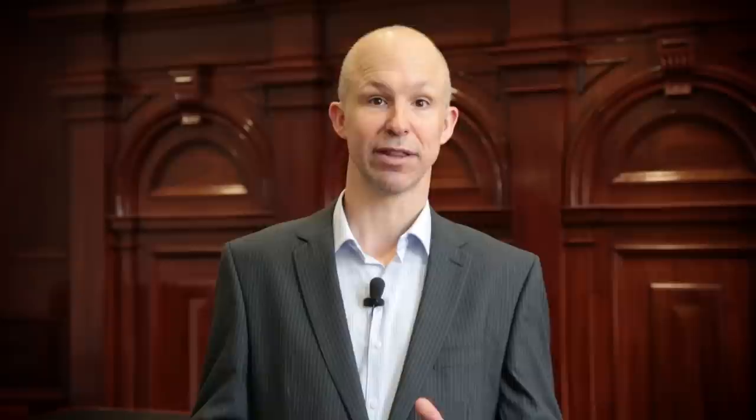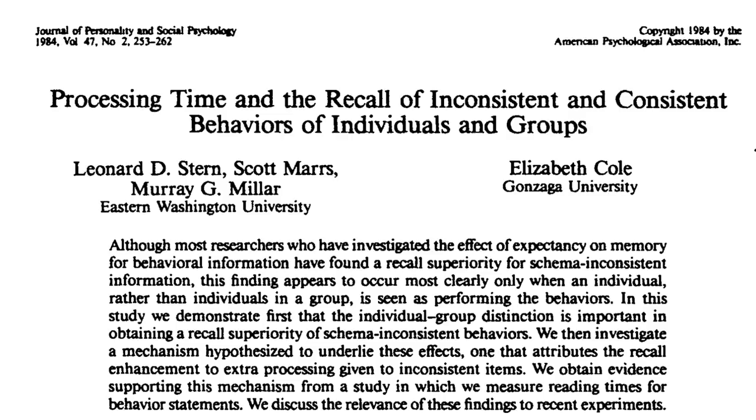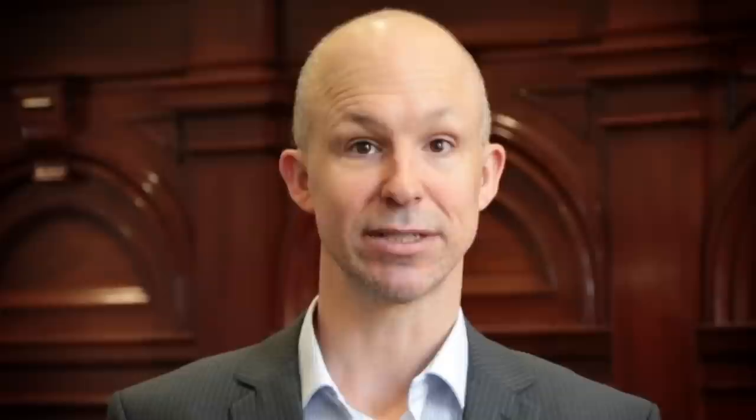There is an alternative perspective, however. We, and some others, think that we use stereotypes strategically to maximise the amount of information that can be stored in our brains under taxing conditions. Stereotypes help us encode some information so that we can turn our attention to other parts. There's actually evidence that perceivers try to engage in as much thinking about unexpected, or stereotype-inconsistent, information as possible. For example, Stern and colleagues in 1984 found that participants spent more time reading and thinking about stereotype-inconsistent behaviours, and consequently recalled a greater number of these behaviours than stereotype-consistent behaviours. McRae and colleagues found that when perceivers made use of stereotypes when encoding information, they were then able to allocate more of their thinking capacity to other cognitive tasks.